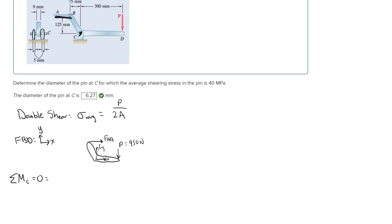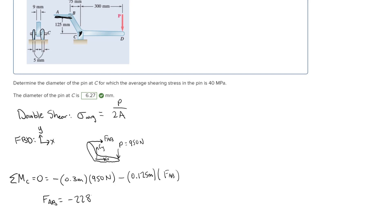Starting with force P, which creates a negative moment about point C: the distance is 0.3 meters and the force is 950 newtons. Then force FAB also creates a negative moment, so minus — the distance is 0.125 meters and the force is FAB. Solving for FAB, we get FAB is equal to negative 2280 newtons.